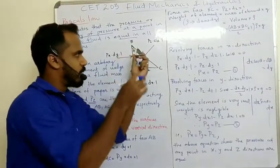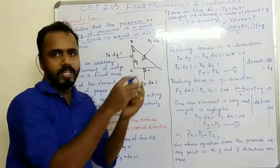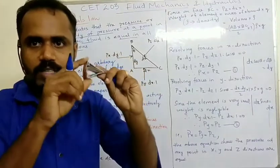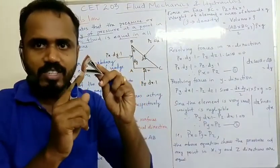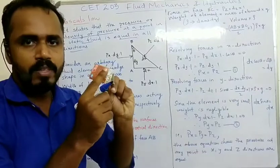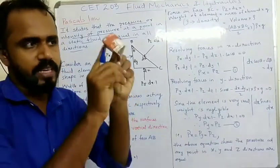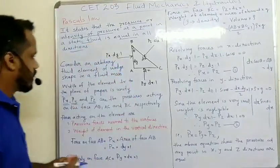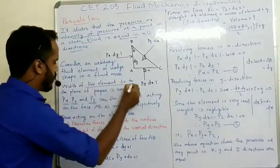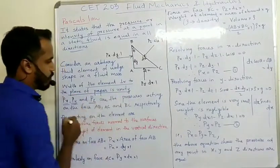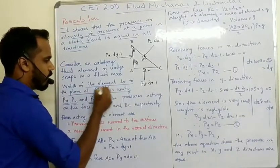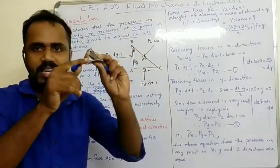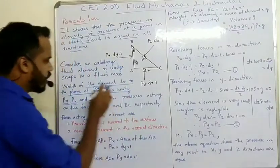Here is an elementary wedge. This is perpendicular to the board. The width of the element perpendicular to the plane of the paper or board is unity — that is, one.